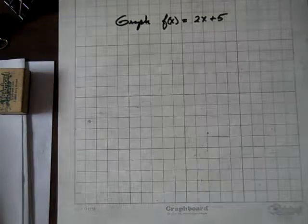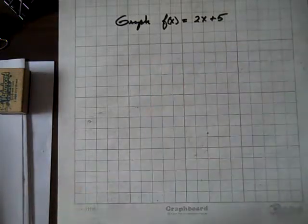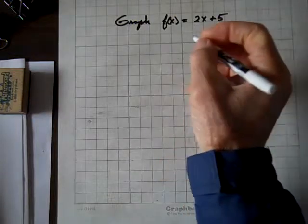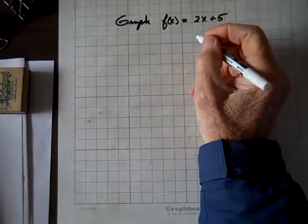Our task now is to graph the equation f(x) = 2x + 5. So what we'll do, we'll find the intercepts.